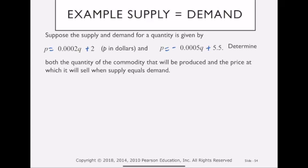Let's suppose the supply and demand for quantity is given by these two equations, where P stands for price and Q is the quantity. So I need to figure out the quantity that will be produced and the price at which we'll sell it. And that's when supply equals demand. So that's when these two lines are going to intersect.